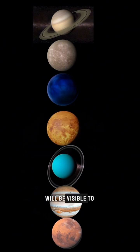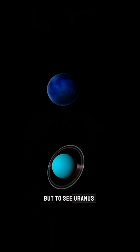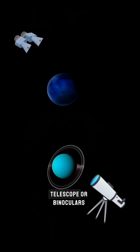Most of these planets will be visible to the naked eye, but to see Uranus and Neptune, you may need a telescope or binoculars.